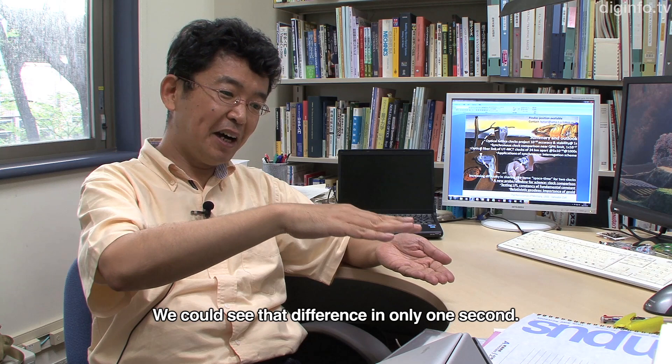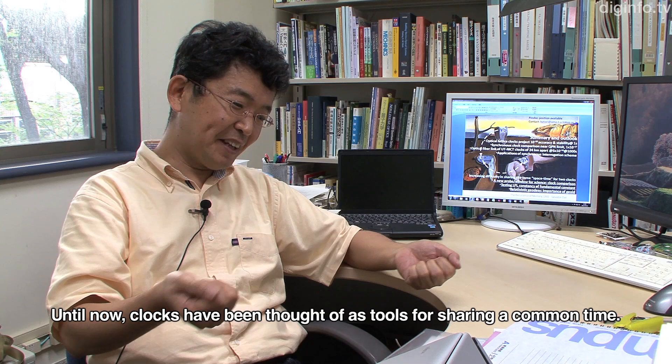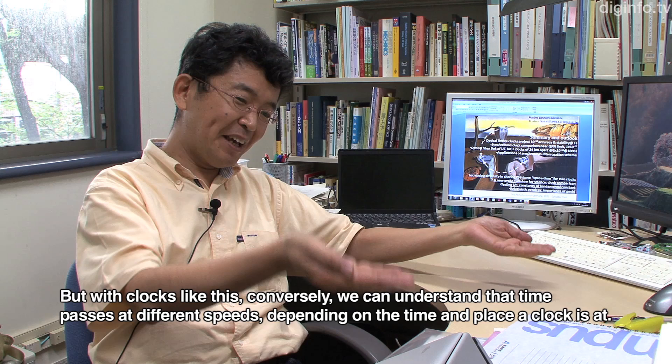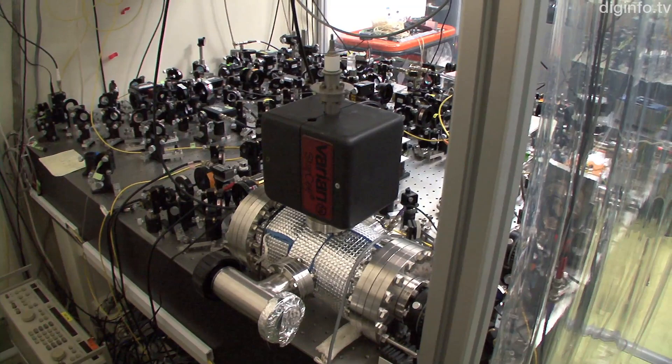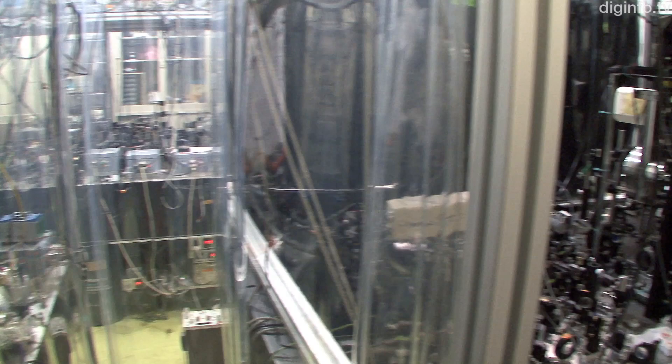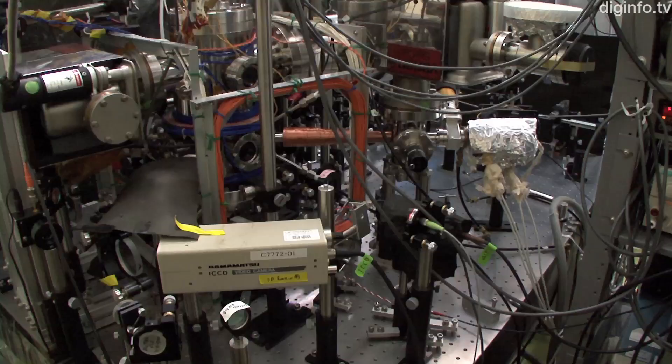The clock is a tool to share time. We can see the clock is changing the time, which means time runs at different speeds. Professor Katori expects that using optical lattice clocks to demonstrate this kind of relativistic spacetime and to measure the distortion of space-time will lead to new applications.